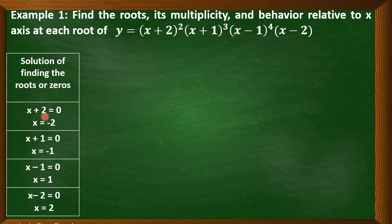So 2 transposes to the right side and becomes negative 2. For the second factor, x+1 = 0, giving us x = negative 1. For the third factor, x−1 = 0, giving us positive 1. For the last factor, x−2 = 0, giving us positive 2. So we now have all the roots: negative 2, negative 1, positive 1, and positive 2.